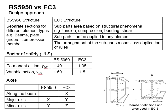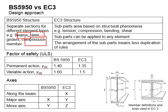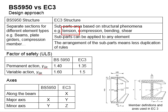The first difference is about the design approach. British Standards designs structures on the basis of the types of elements, such as the beam, the plate girder, and the compression members. However, in Eurocode 3 the design of members is based on the loads acting on the members, such as tension, compression, bending and shear.